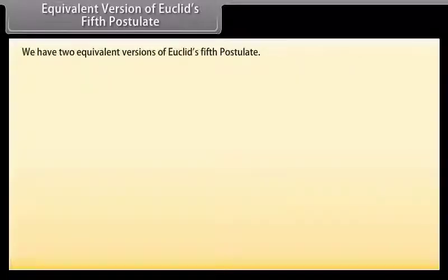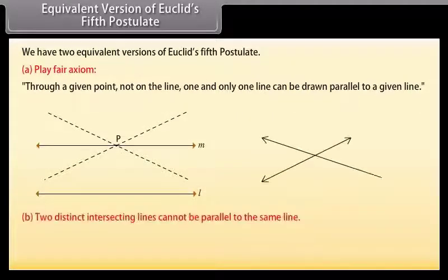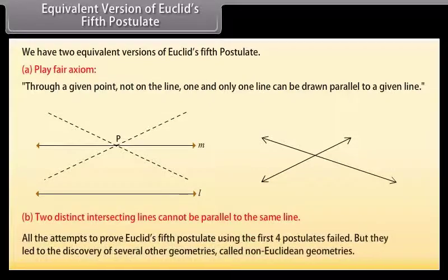Equivalent versions of Euclid's fifth postulate. We have two equivalent versions of Euclid's fifth postulate. The first one is Playfair axiom. This says that through a given point, not on the line, one and only one line can be drawn parallel to a given line. And the other one is: two distinct intersecting lines cannot be parallel to the same line. All the attempts to prove Euclid's fifth postulate using the first four postulates failed, but they led to the discovery of several other geometries called non-Euclidean geometries.